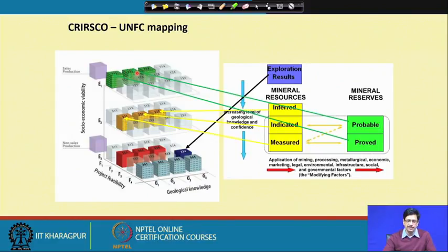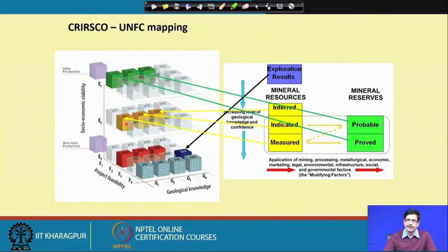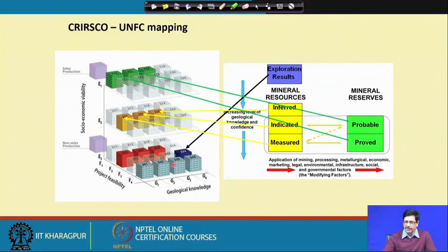A code like '1-1-2' means the quantity is estimated but with a little greater uncertainty. The 'inferred' or 'indicated' categories map to non-commercial categories — for example, codes like '2-2-3' or '2-2', where geological certainties are still very low but the deposits could potentially become producing ore bodies in the future after the parameters are satisfied. A situation like '3-3-4' is where only exploration results have been obtained, geological certainty is still to be proved, project feasibility may be low, and economic viability has not been worked out.